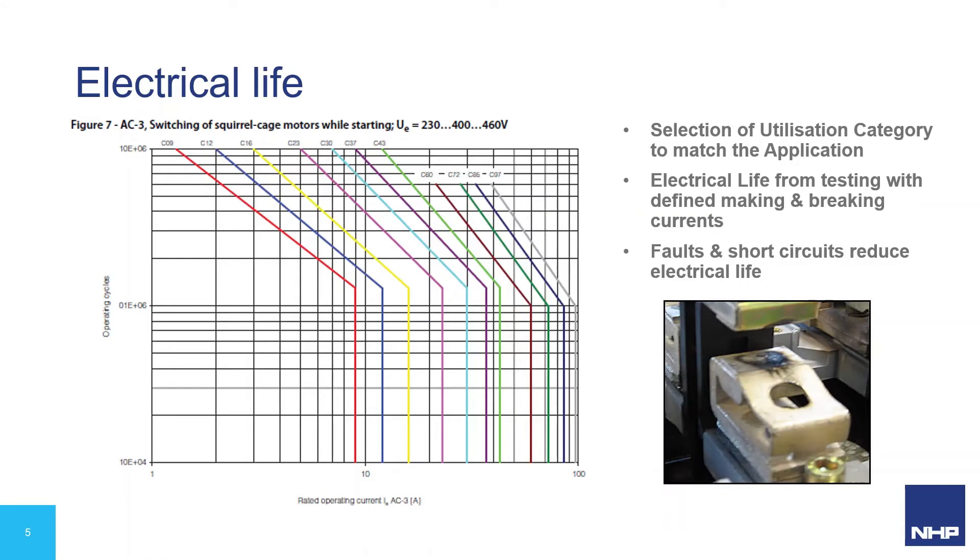Providing, in contactor selection, the utilization category rating is selected for the load characteristics. For example, a motor, the AC3 rating is used. The electrical endurance curves provide the number of switching cycles expected before the contact sets are worn out. However, if the contactor is subjected to making onto short circuits, significant life reduction will occur. So if short circuit events occur, scheduling of maintenance inspections should be undertaken to verify remaining life expectancy.